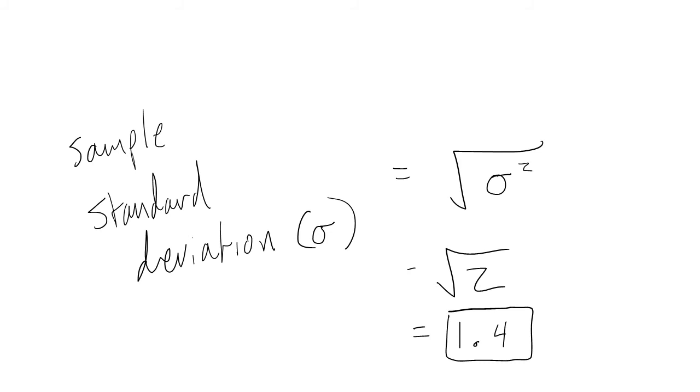To get our sample standard deviation, which is symbolized as sigma, we take the square root of our variance. The reason we take the square root is that we originally squared all of our deviations to calculate variance. So to put the standard deviation back into our variable's units, we need to take the square root. And so the standard deviation is roughly interpreted as the average distance of our values from the mean.